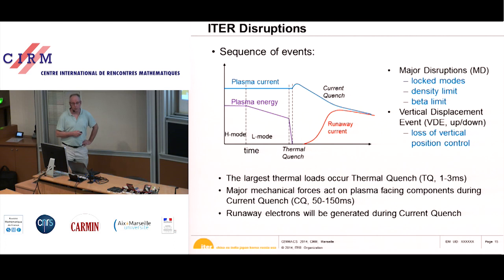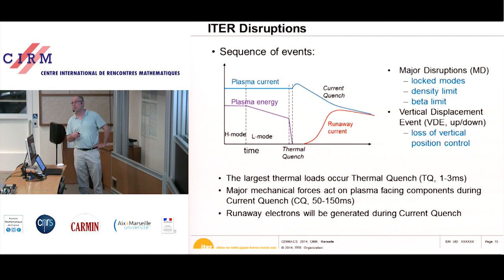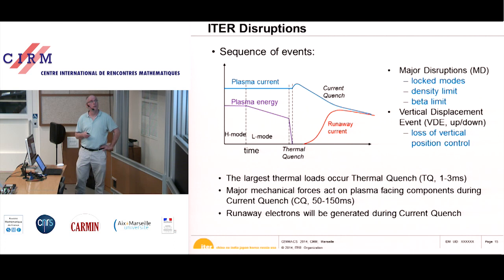What is a disruption? A disruption is a sudden termination of the plasma. As a function of time, the plasma is healthy in H-mode, then something happens — possibly an MHD instability — and the plasma decays to L-mode, then in one to three milliseconds the whole plasma energy is lost. This is normally due to a very large MHD instability which makes the plasma magnetic field become ergodic over the whole plasma radius, so there is no thermal energy confinement anymore.